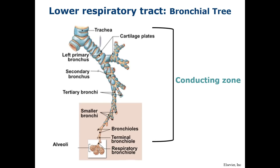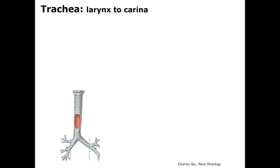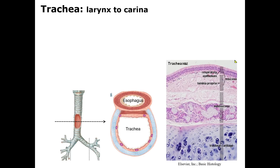The second portion of the conducting zone consists of the trachea, bronchi, and the bronchioles through the terminal bronchioles. We will walk through each component of the conducting zone, paying particular attention to the special features that define each component, including changes in the mucosa and epithelium, that allow for changing functions as we move deeper into the respiratory tree. We will start with the trachea, which is continuous with the larynx and ends at the carina. Let's take a cross-section through the trachea and look at its components, starting with the mucosa.